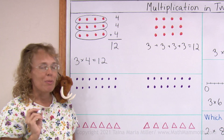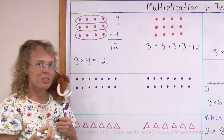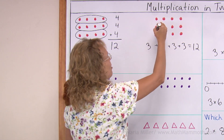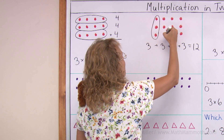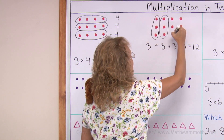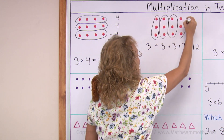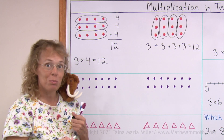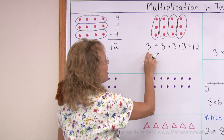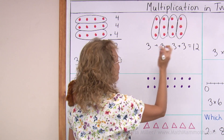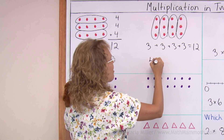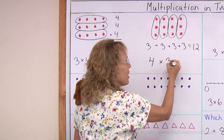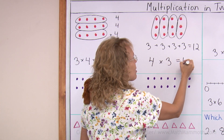But I can also make the groups in a different way. I can make the groups to be these columns — this way. And this time I get four groups of three. I can write the addition or I can write the multiplication: four groups of three equals twelve.